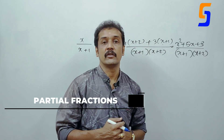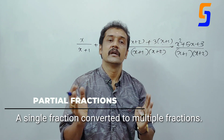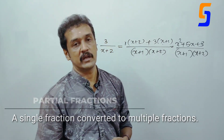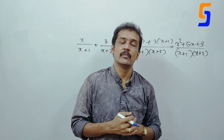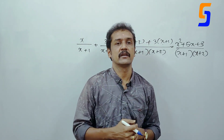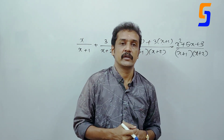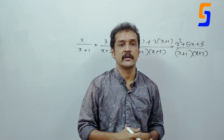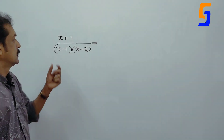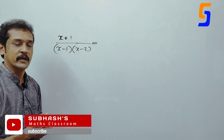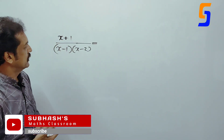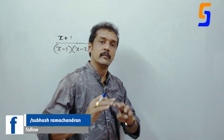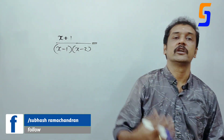This is the name of the Partial Fraction. A single fraction converted to multiple fractions — it is called Partial Fraction. This is easier to answer. You can answer the traditional one. We will learn how to do this one or the fractions.